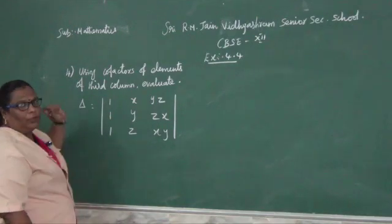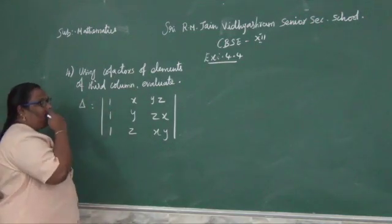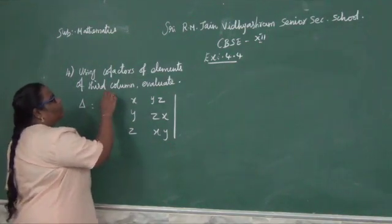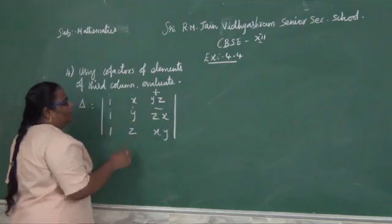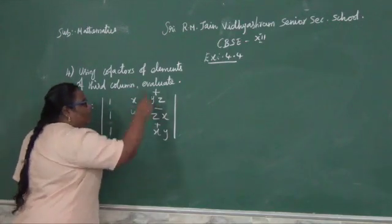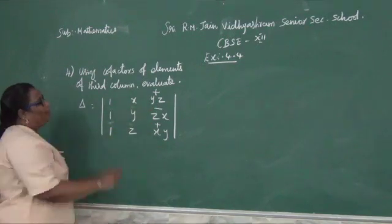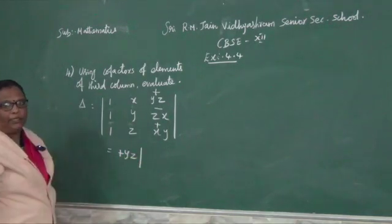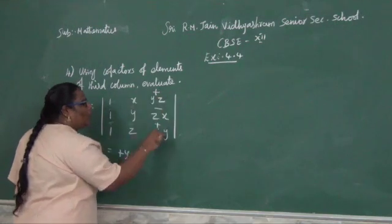This is exercise 4.4, fourth sum — using cofactor of elements of the third column and evaluate. In the previous sum you saw the second row; this is the third column. First, you can put a sign as: plus, minus, plus, minus, plus, minus, plus, minus, plus. You can see the third column alone — you can put a sign plus, minus, plus.